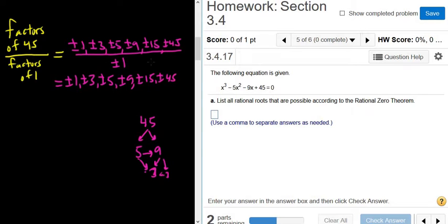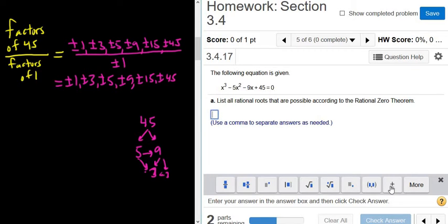All right, let's go ahead and type these in. And I'm going to use the plus or minus key. So let's see. If you click here, yep, there it is. There's the plus or minus key. So plus or minus 1, comma, plus or minus 3, comma, plus or minus 5.